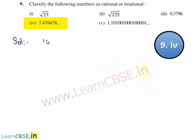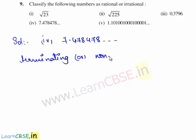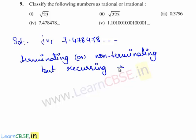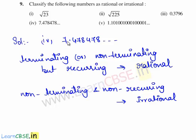Now let us move on to the fourth bit. We need to classify whether 7.478478... is rational or irrational. A number whose decimal expansion is terminating or non-terminating but recurring is a rational number, whereas a number whose decimal expansion is non-terminating and non-recurring is an irrational number. Here, 7.478478... is non-terminating but the digits 478 are repeating, so it is non-terminating but recurring. Therefore, 7.478478... is a rational number.